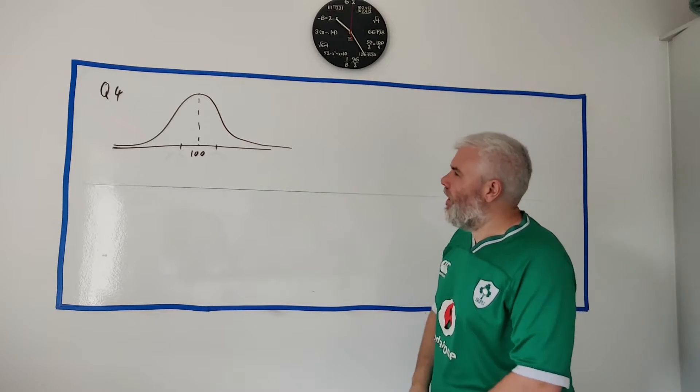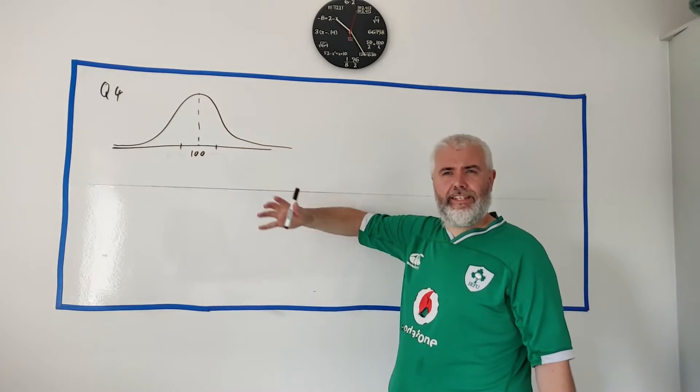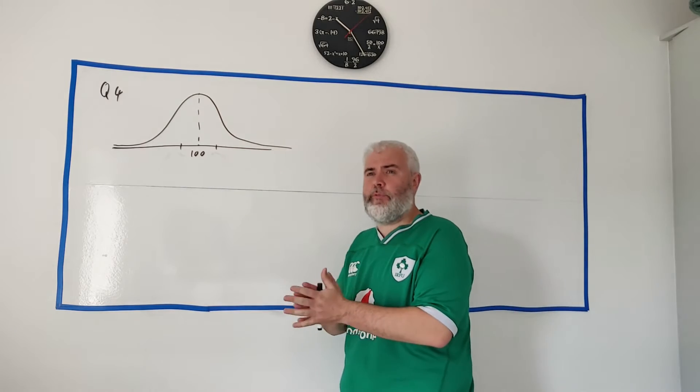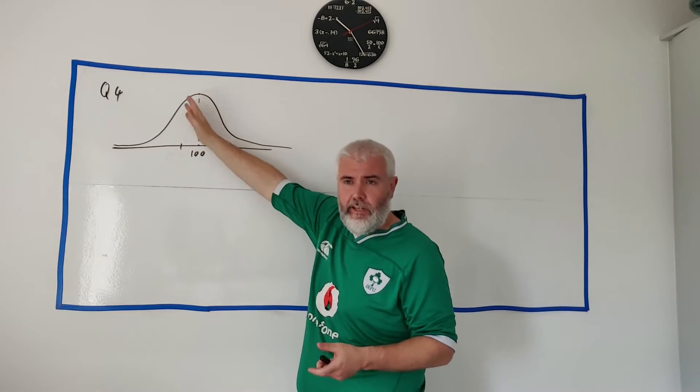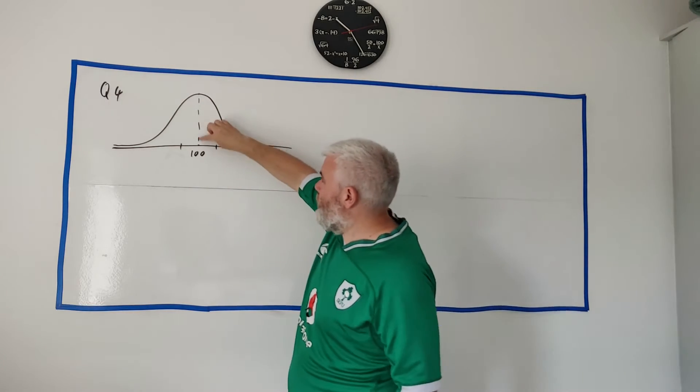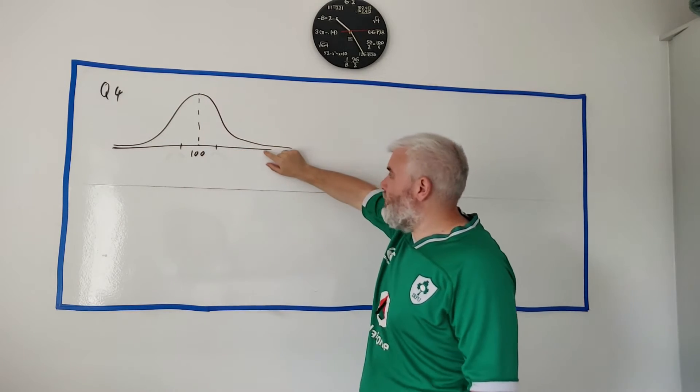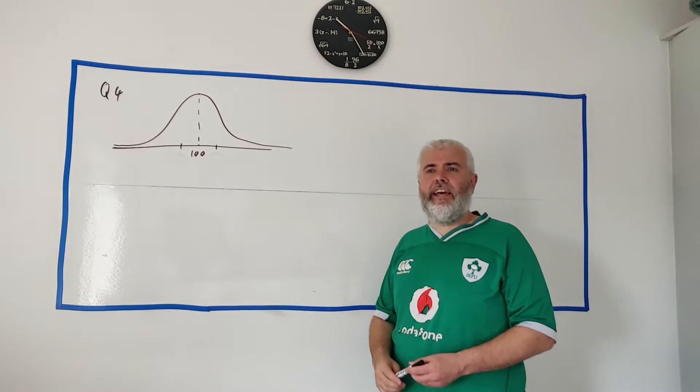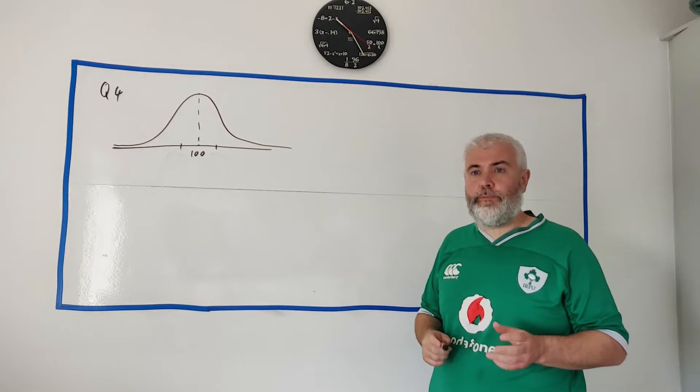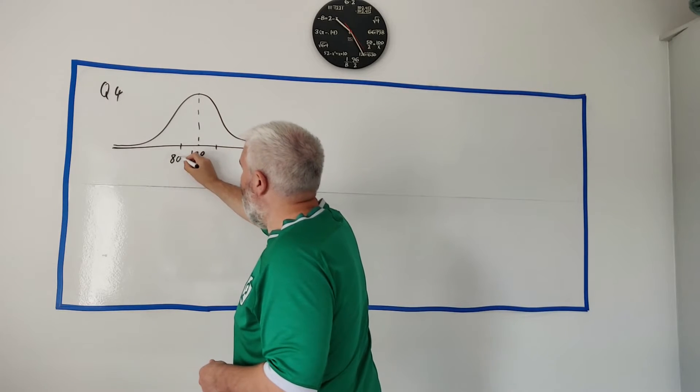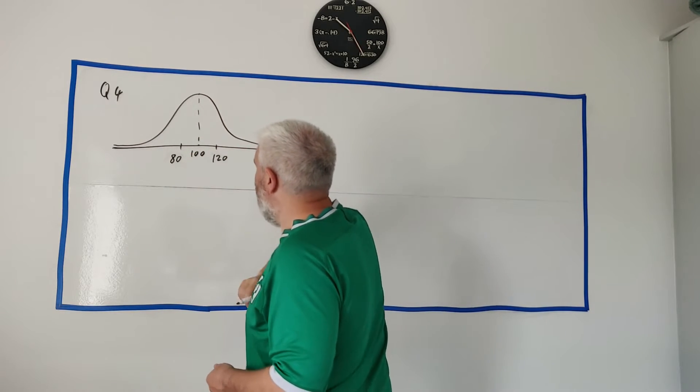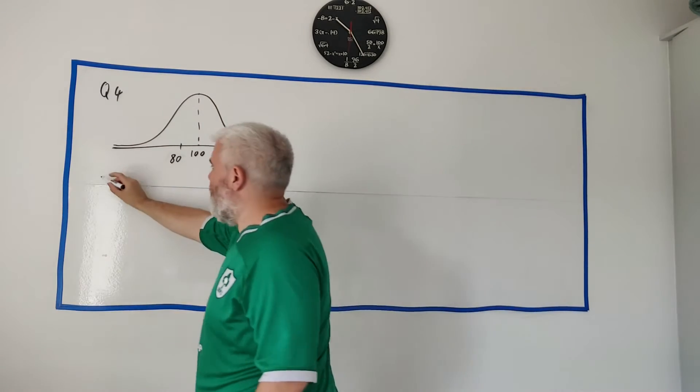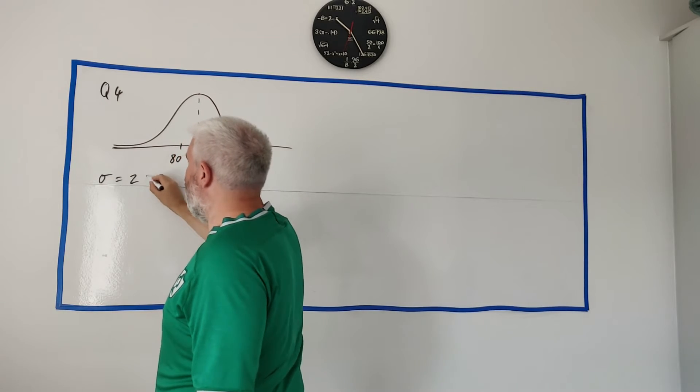Okay for part B they give us this table here, it's a test they give students, a reading test, and they normalised it so the average student gets 100. Most people are average, lots of students are here, not many people got a really high score and not many people got a really low score. So they ask you what percentage of people scores between 80 and 120? That's impossible to answer from this, except they give us one more bit of information. They told us the standard deviation is equal to 20.